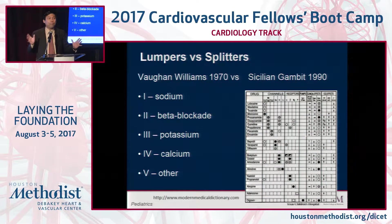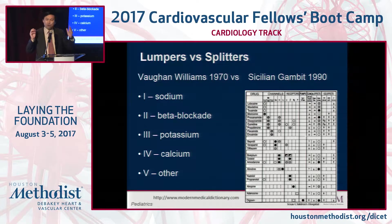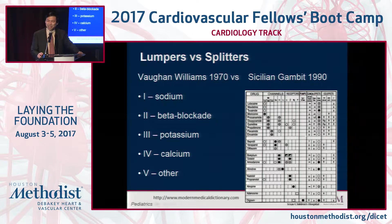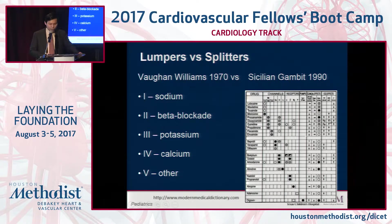It depends if you're a lumper or a splitter. If you're a lumper you like to throw everything into big categories. If you're a splitter you want to know every little detail. Vaughan Williams in 1970 came up with the original classification: class 1 sodium channels, class 2 beta blockers, class 3 potassium, class 4 calcium, and class 5 for agents that couldn't be otherwise characterized. Twenty years later, electrophysiologists met in Sicily and produced the Sicilian gambit, which breaks down every nuance of beta blocker, potassium, and sodium receptor interactions. I'm more of a lumper so I prefer the Vaughan Williams classification with special indications.